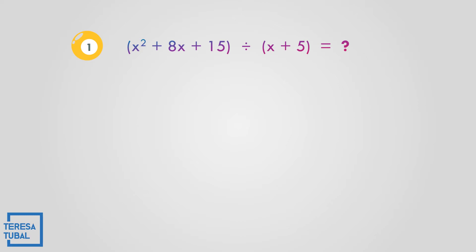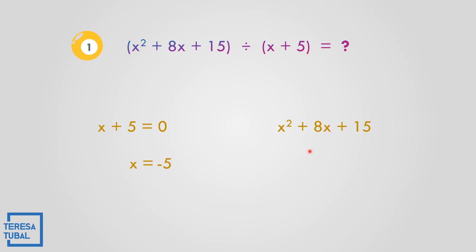Let us divide x squared plus 8x plus 15 divided by x plus 5. We need to get the value of x. So x plus 5 equals 0, meaning x is equal to negative 5. The polynomial x squared plus 8x plus 15 is already arranged from highest to lowest exponent. The leading coefficients are 1, 8, and 15.